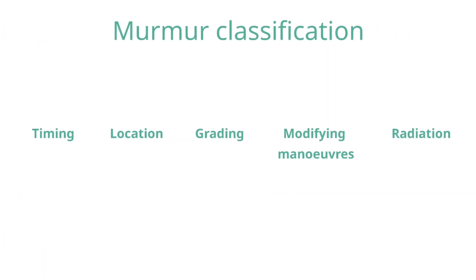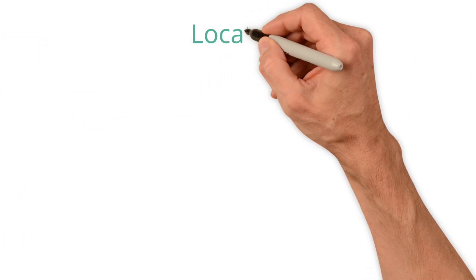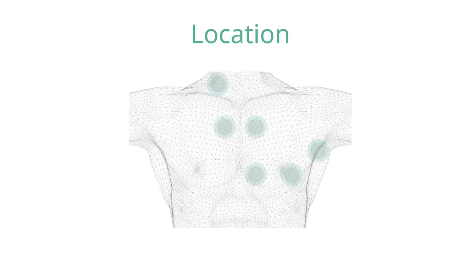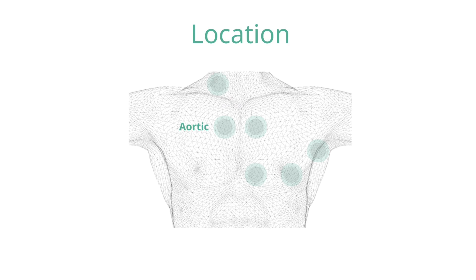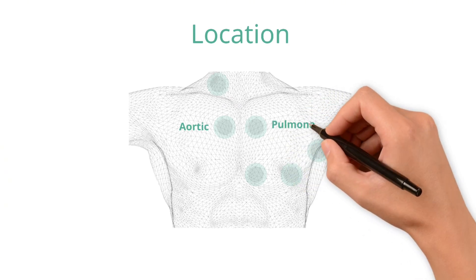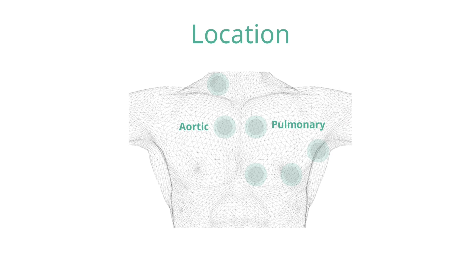There are six main auscultation locations on the torso. The aortic area is located in the second intercostal space on the right-hand side of the sternum. The pulmonary area is in the second intercostal space on the left-hand side of the sternum. The tricuspid area is in the fourth intercostal space on the left-hand side of the sternum, and the mitral area is in the fifth intercostal space on the left mid-clavicular line. Murmurs can also radiate to two additional areas: the axilla and the carotid arteries.